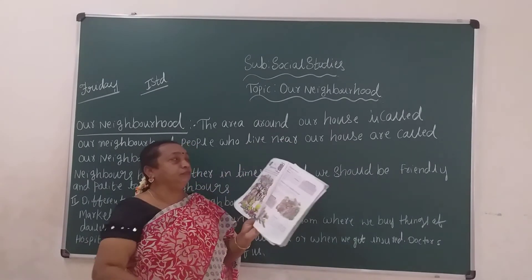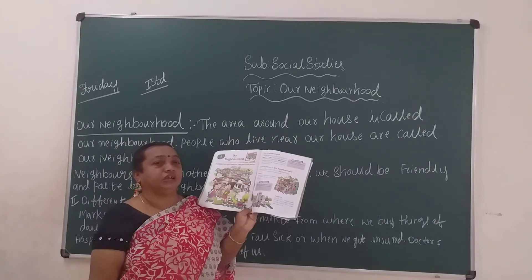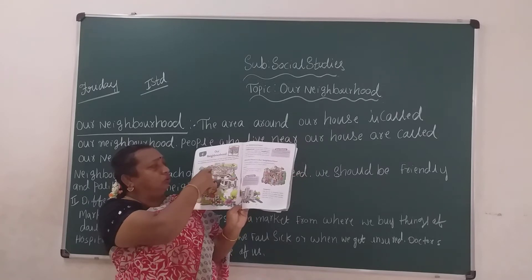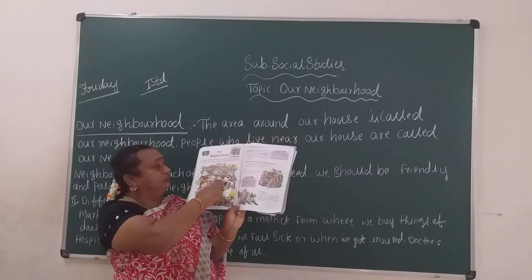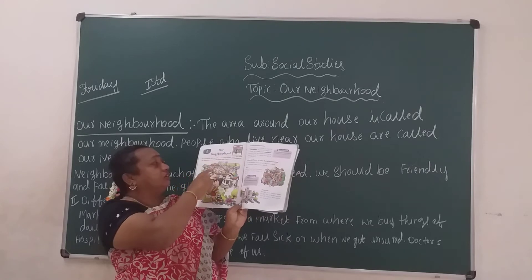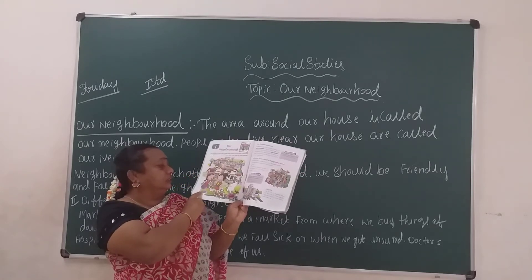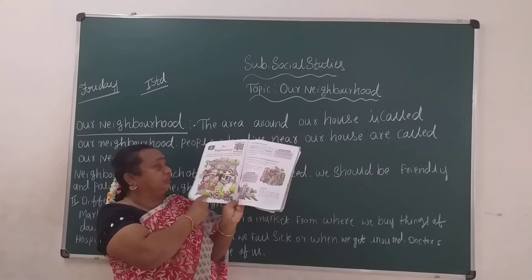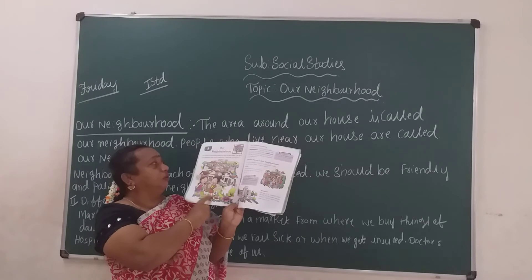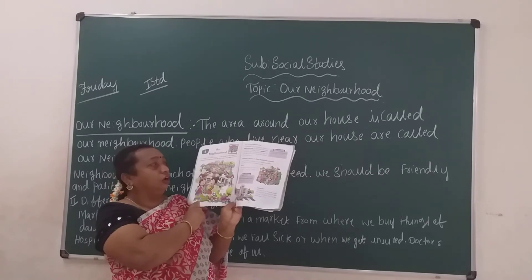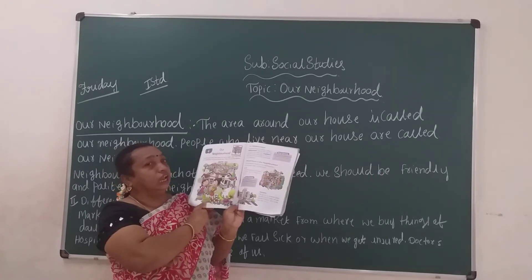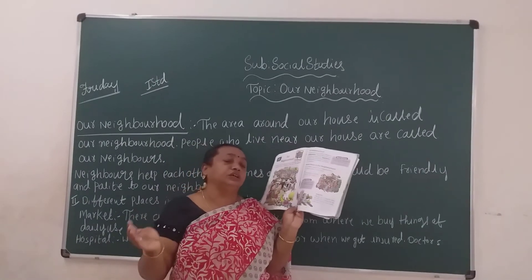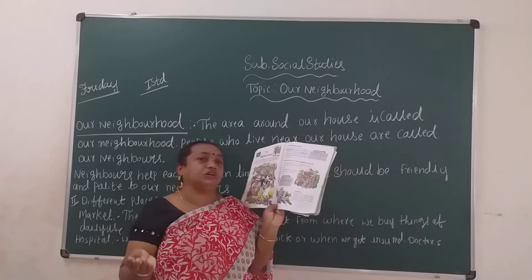Once again, I will repeat. What is today's topic, children? Today's topic is Our Neighborhood. Look at this picture — the houses of Aarti and Priti. They both are neighbors and good friends. They love to play together always, because they both are friends and neighbors.